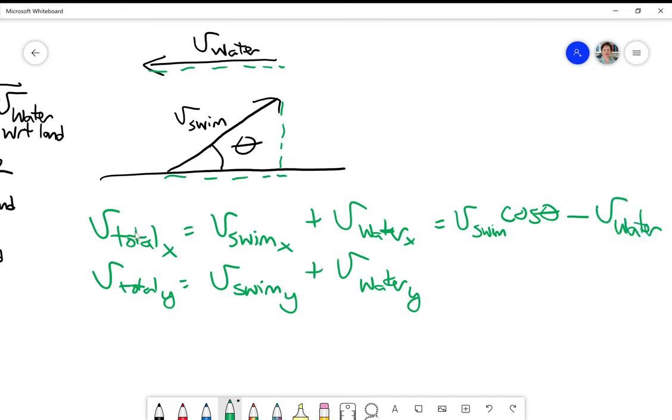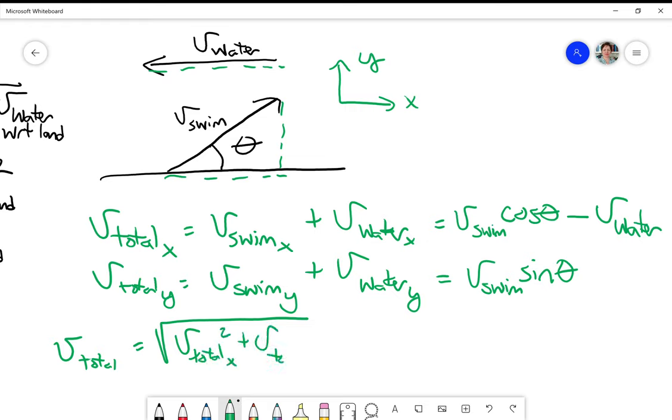And the Y component of the water is zero. So this is just V swim sine theta, where I have used axes that look like X and Y. Okay, so that means that the V total is going to be equal to the square root of V total X squared plus V total Y squared. And you can do that math. So that's what we're going to be doing in general. Stay tuned.